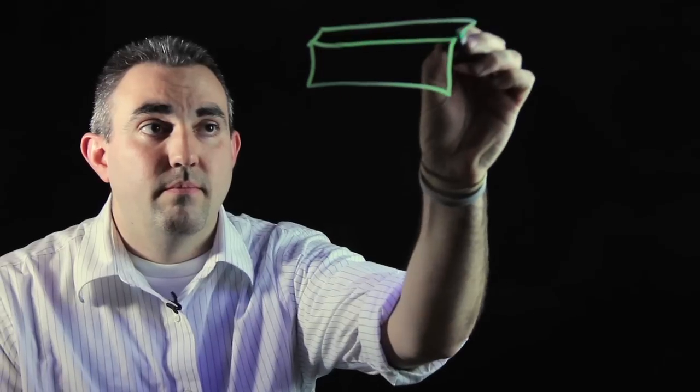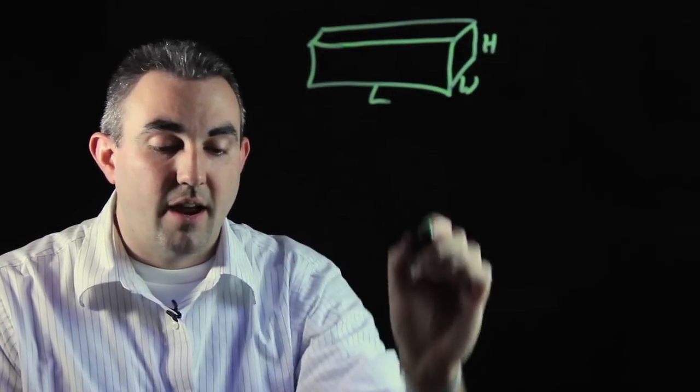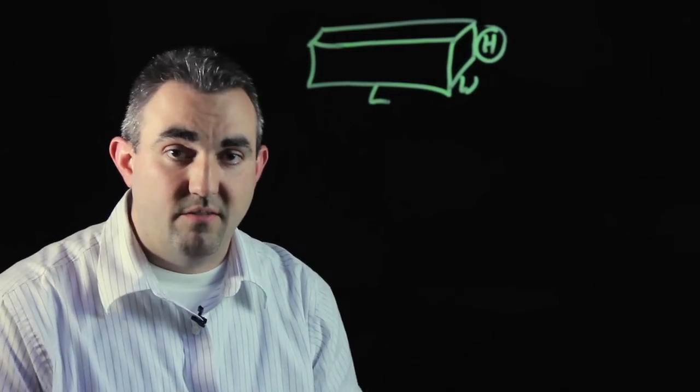Now, the object we're going to be looking at today is a rectangular prism which has a length, a width, and a height. The height is going to be the thing that we're trying to find. That's the missing piece of our figure.